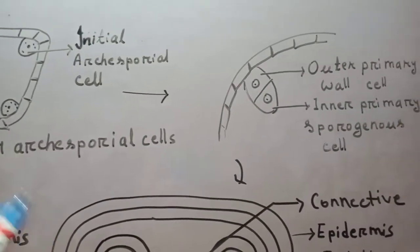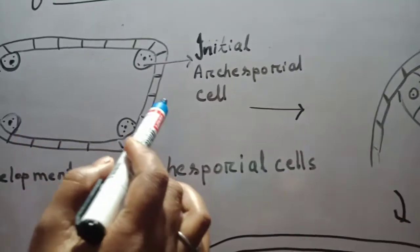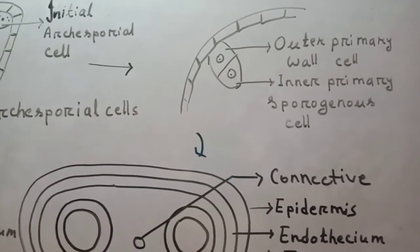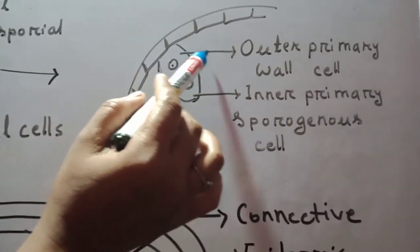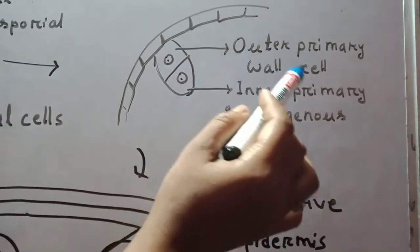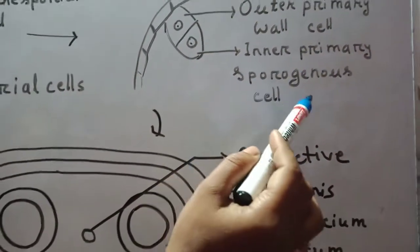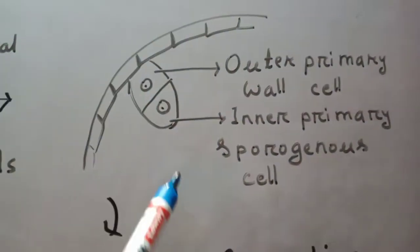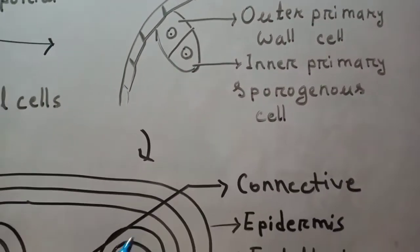Archesporial cells divide to form the outer primary parietal cell and inner primary sporogenous cell. The primary parietal cell divides several times to form